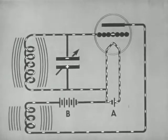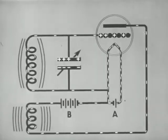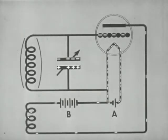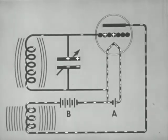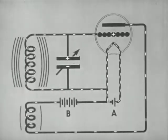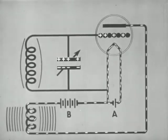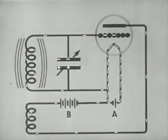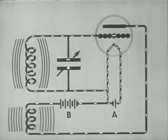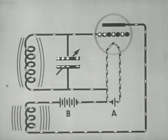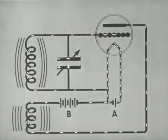The frequency at which the current alternates is determined by the resonant frequency of the grid circuit, which may be controlled by a variable condenser. The current may alternate millions of times per second. Direct current from the B battery is thus changed to a high-frequency alternating current in the grid circuit.